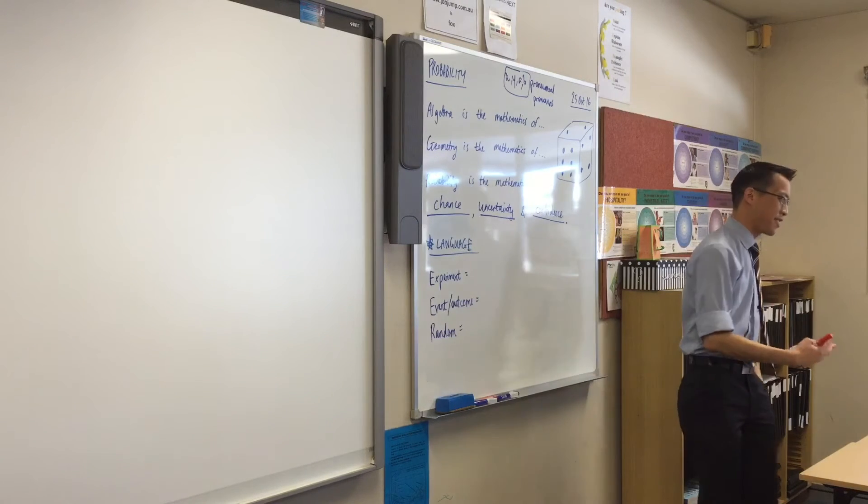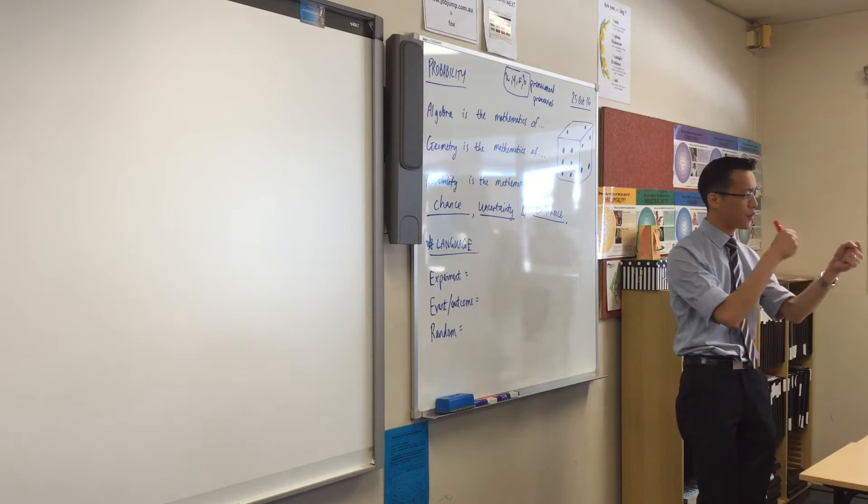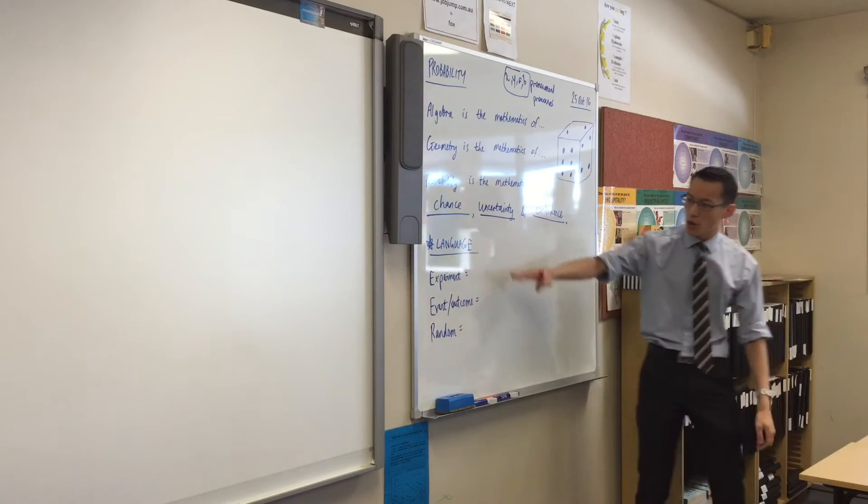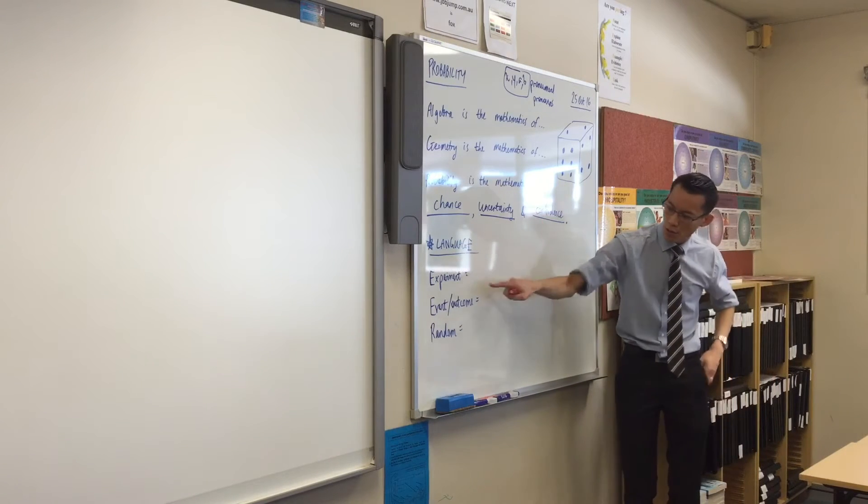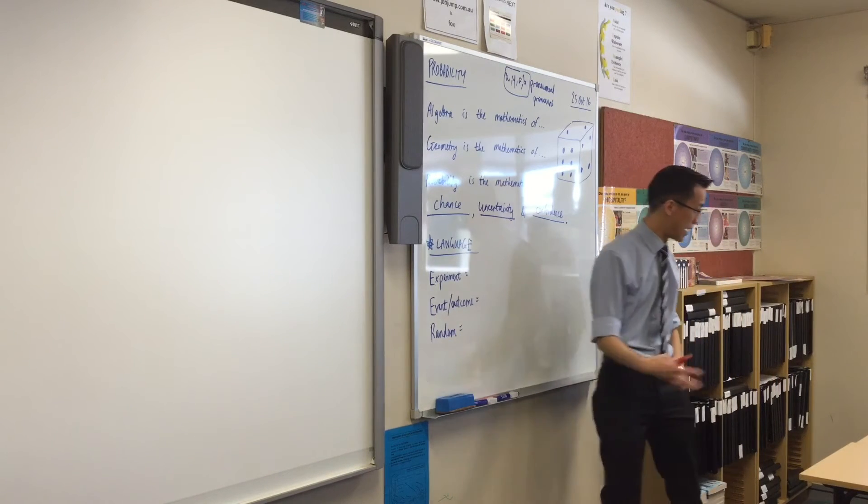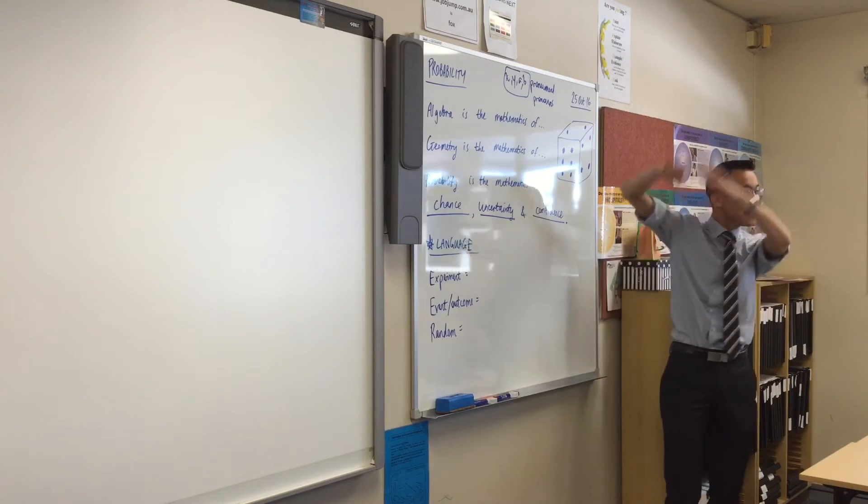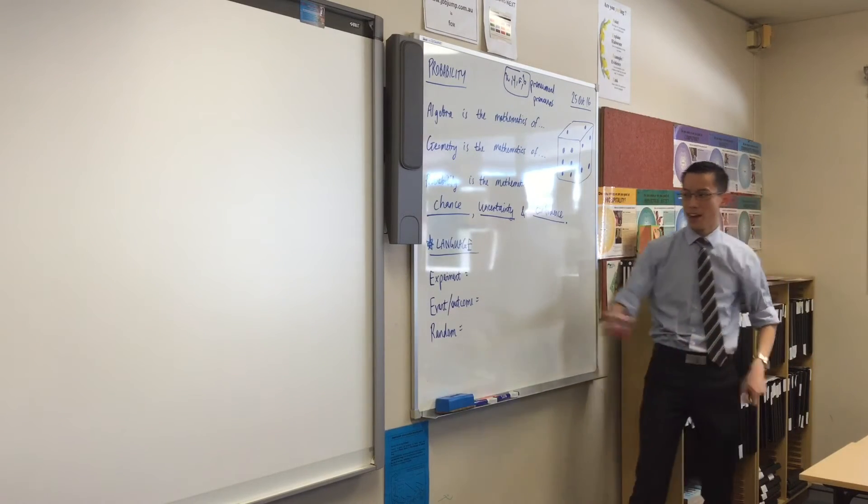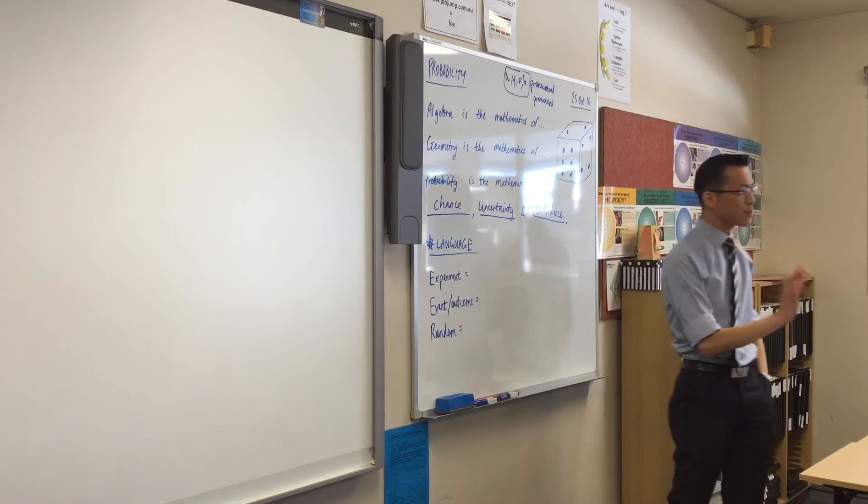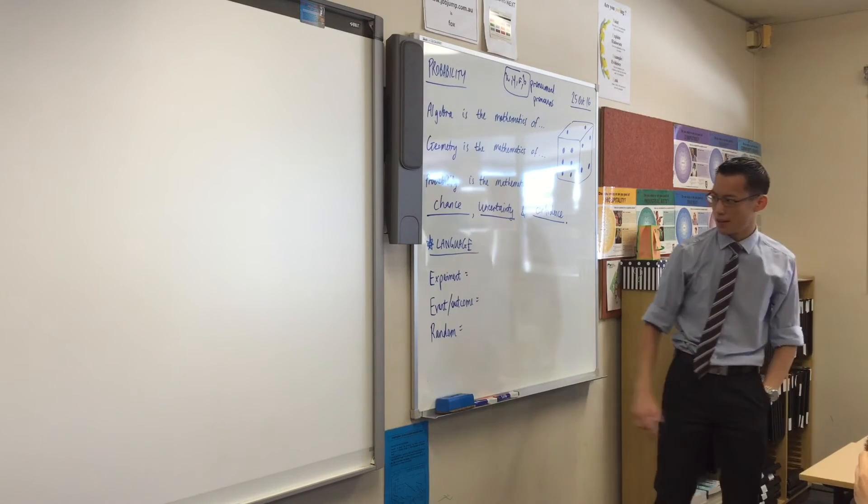Language allows us to describe things and it allows us to describe them with accuracy so we can work with them, okay? So, I've got one, two, three, four, and a fifth phrase or word that I'm going to give to you. So, let's talk about this, right? In the realm, in the sphere of probability, when we talk about an experiment, we don't just mean like in science what an experiment is.